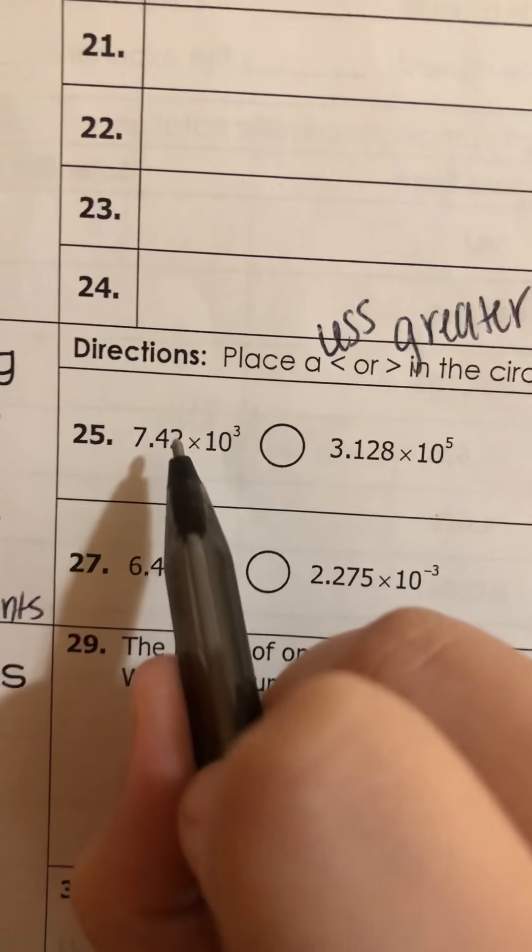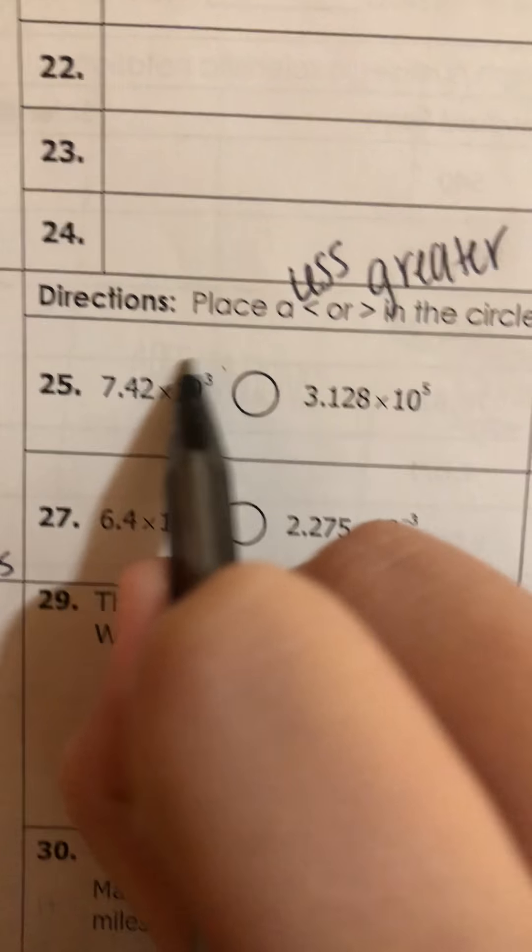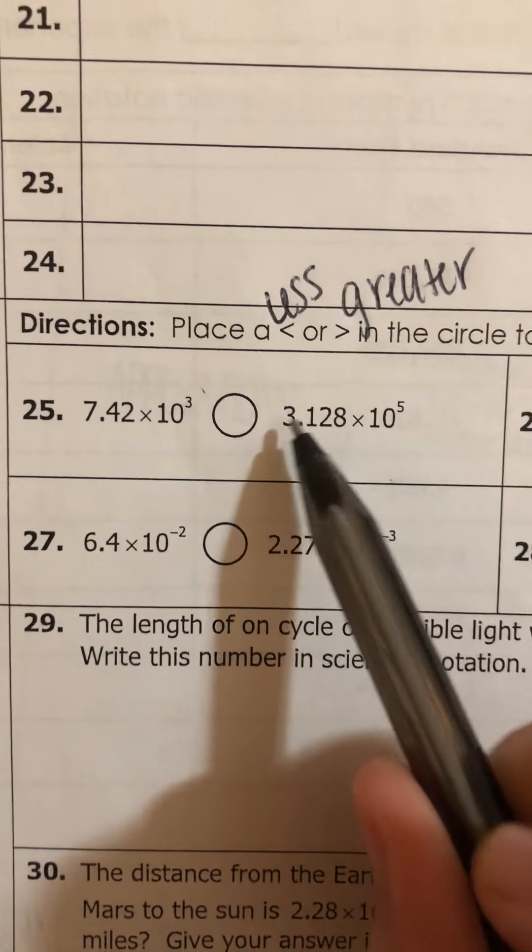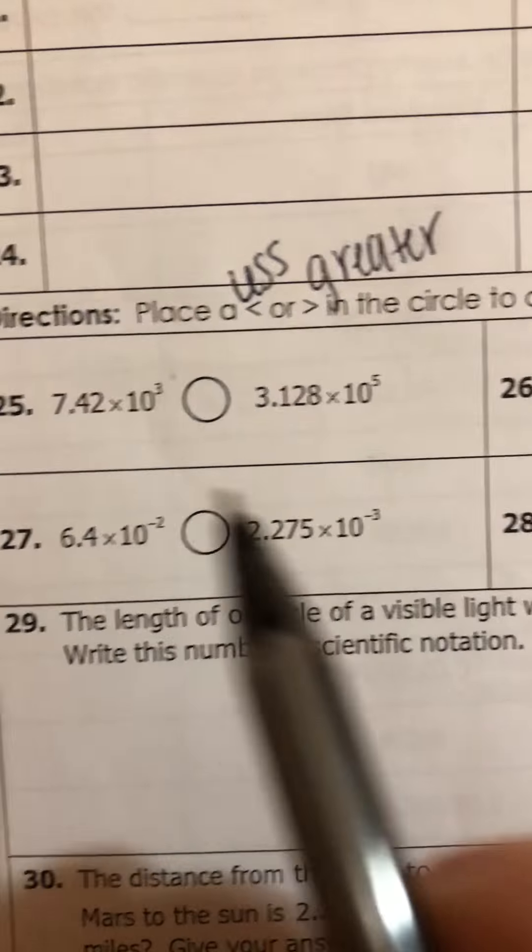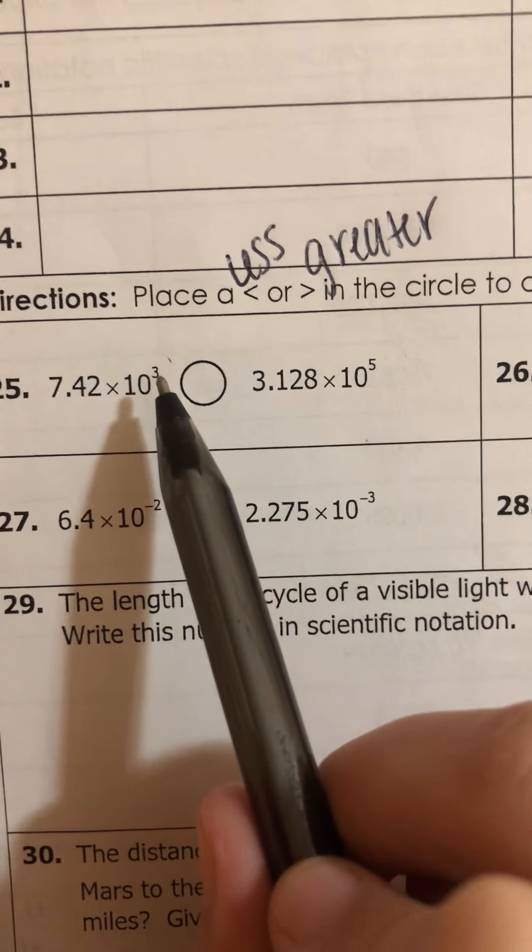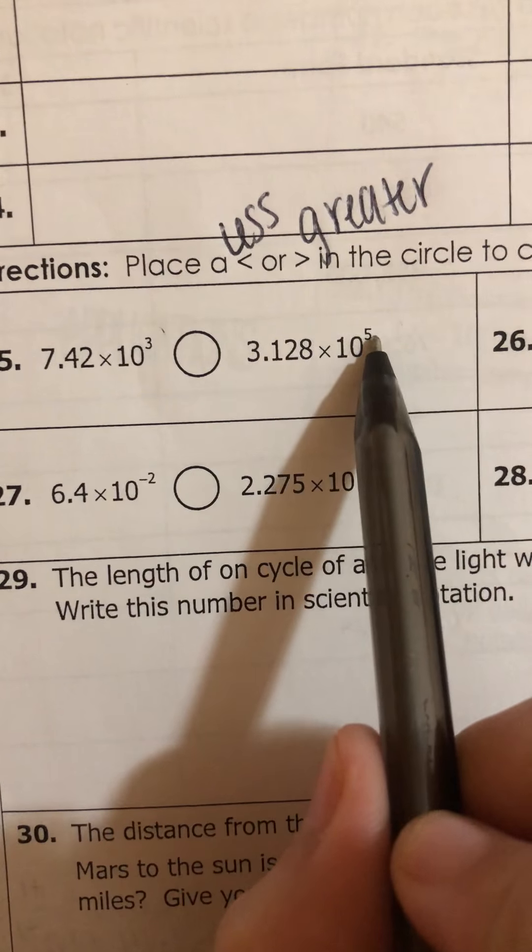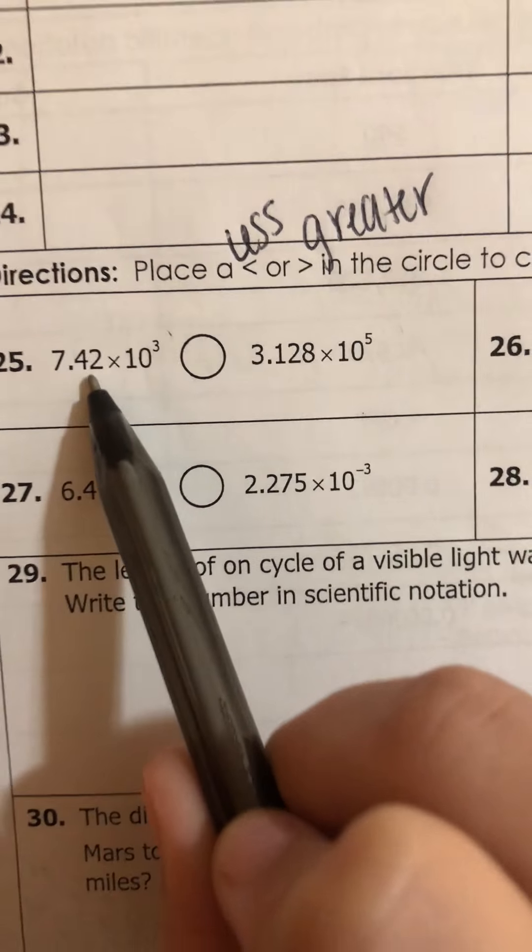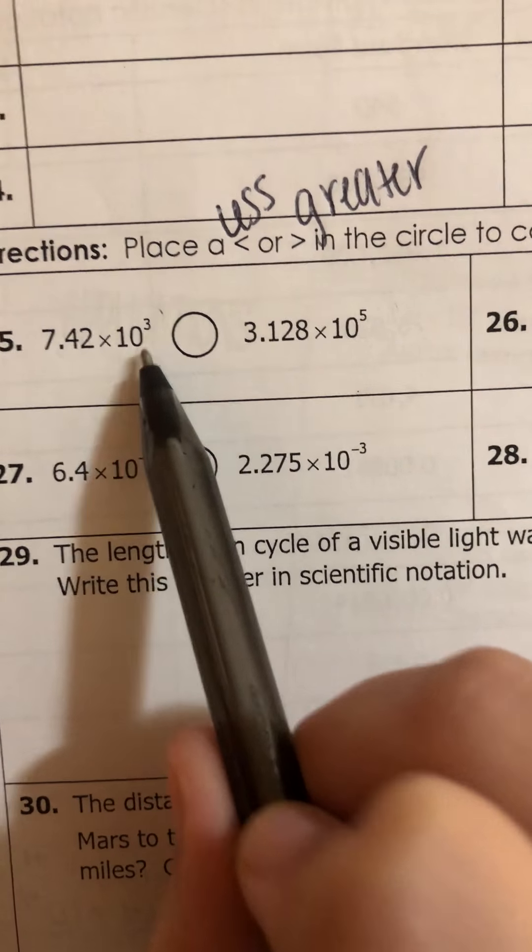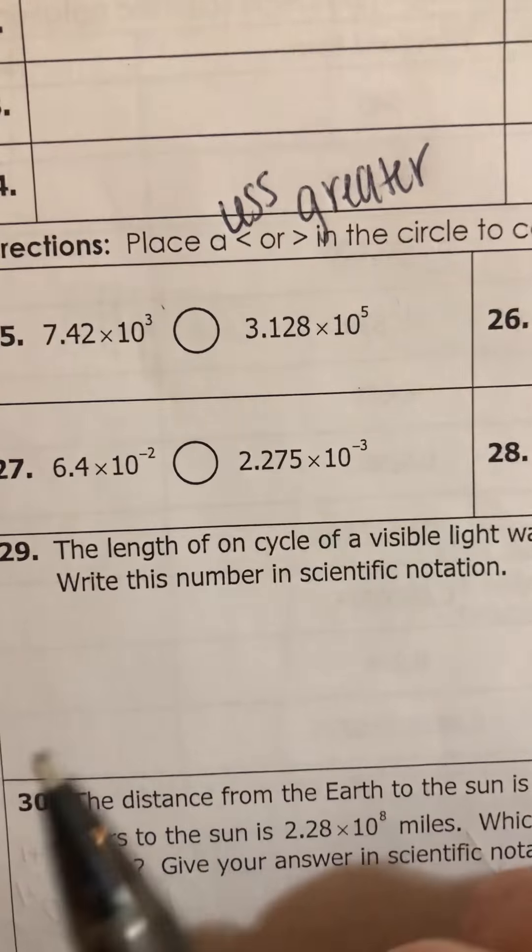Alright, example 25. We have 7.42 times 10 to the power 3 and 3.128 times 10 to the power 5. Remember we said that if the exponent is positive, which both of these are, these are going to be really big numbers, because we are going to be swooping to the right with a positive exponent.